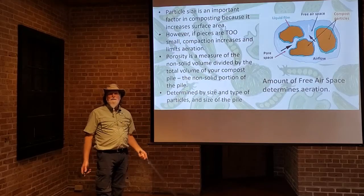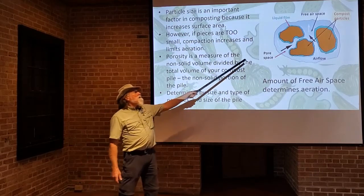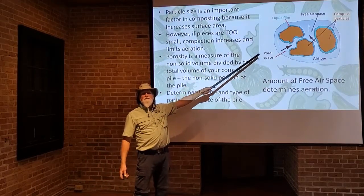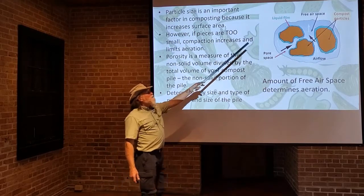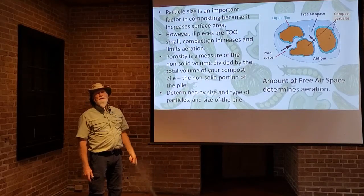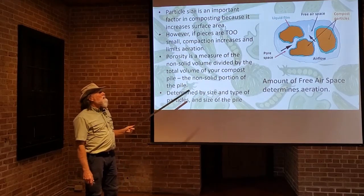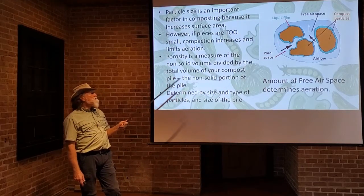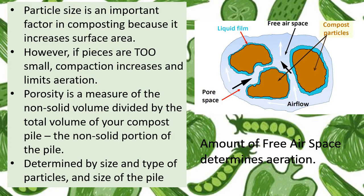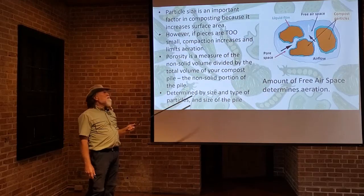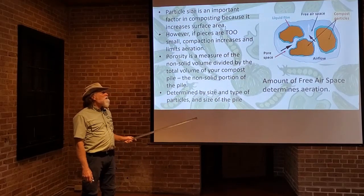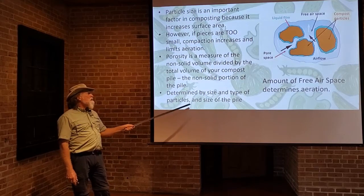You want pieces that are small enough to create a lot of surface area. However, if your particles are too small — as Chris mentioned talking about sawdust — then your pore space gets very, very small and you don't have really good airflow amongst the pile. Even your moisture can get reduced if your particle sizes are too small, and therefore your pore size is too small. This is talking about porosity, which is a measurement of that free air space in your pile, and it is that free air space that determines the aeration. All this is determined by the size and type of particles.